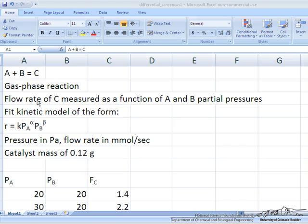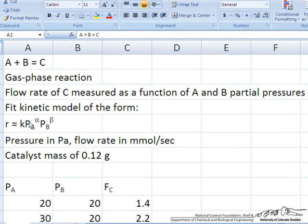I'll show the table in just a minute. The ultimate objective is to determine the rate expression that we can use to design a reactor. Rate is equal to this power law expression: a rate constant times the pressure of A to some power times the pressure of B to some power. So we want to determine alpha, beta, and k in this example.